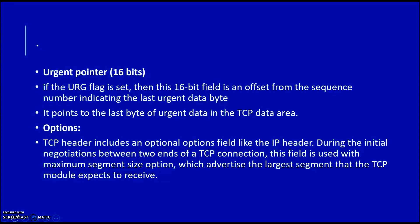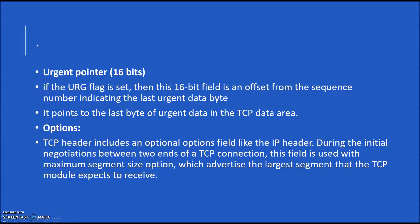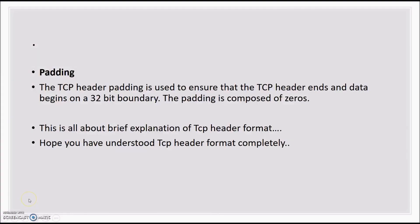The optional field is used for non-mandatory fields which are sometimes used in the transaction. Padding is used to ensure that the TCP header ends and data begins on a 32-bit boundary; padding is composed of zeros. This concludes the brief explanation of the TCP header format. Hopefully you have understood the TCP header format completely. Thank you for watching.